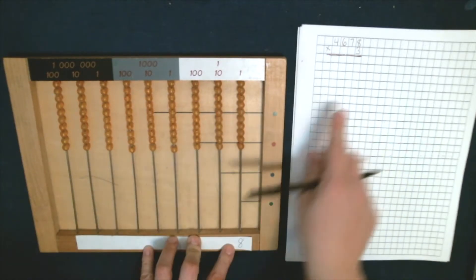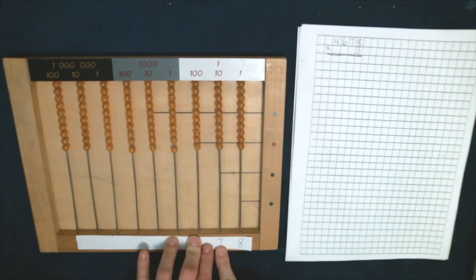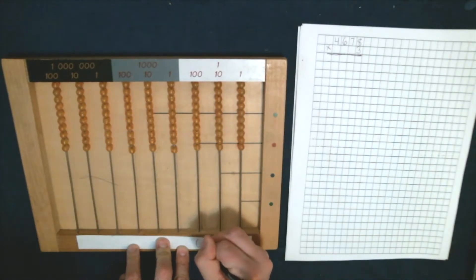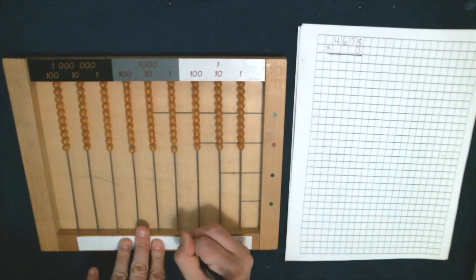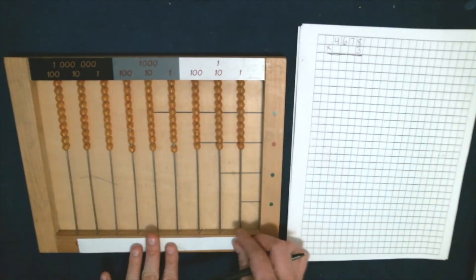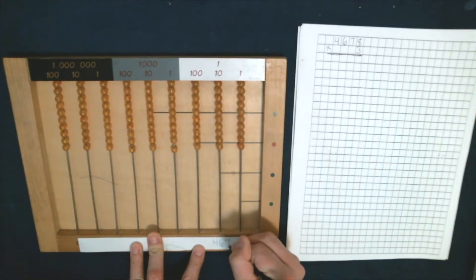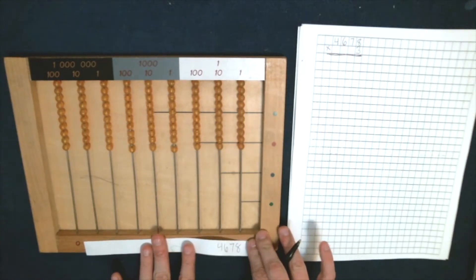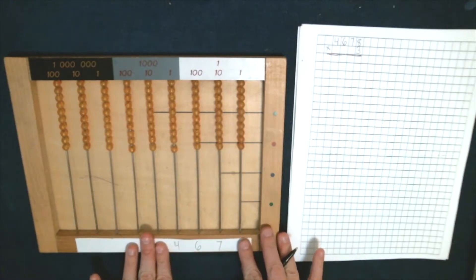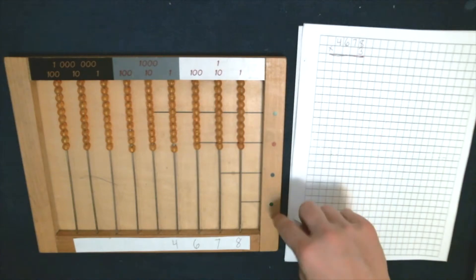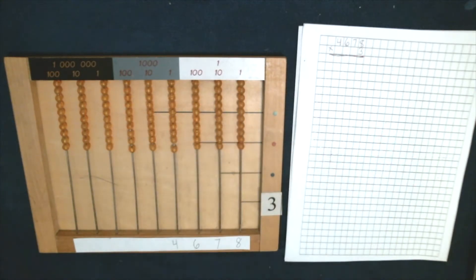Seven tens, I'll write it right under the tens wire. Six hundreds and four thousands. I wrote each of the numbers in my multiplicand very carefully to make sure they line up with the wire. If I wrote it close together like it is on my paper, the numbers aren't going to line up with the wires correctly. I've done my multiplicand, and now I'm going to do my multiplier. This is three units, so I'm going to put three on my unit staff.